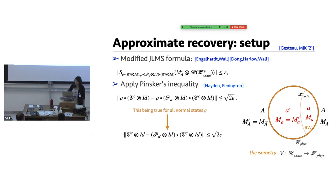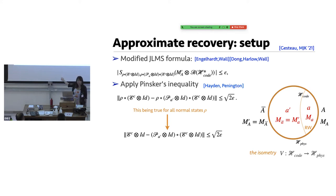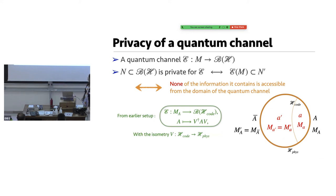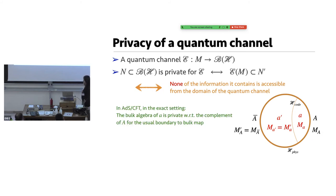Now we've prepared up till here, and we know this is true for all normal states rho. This gives rise to this particular formalism. People who are very familiar with operator algebras are probably realizing that we've prepared so nicely that we can just put it directly into completely bounded norm context. But before getting there, I want to show how privacy and correctability is going to be used, so you can pick it up where we left off after this theorem I'm going to utilize — that's going to take all the difficult jobs after the fact. Privacy just means that none of the information it contains is really directly accessible from the domain of the quantum channel. Earlier we had the explicit quantum channel under this isometry. With this perspective, this is exactly granted for the exact setting, because we're dealing with A as private with respect to the complement for the usual boundary to bulk map.